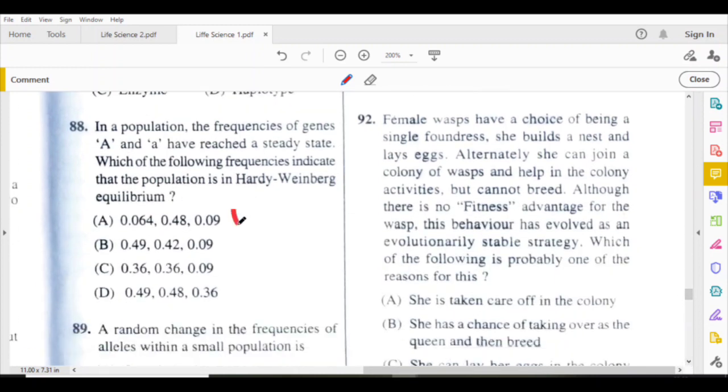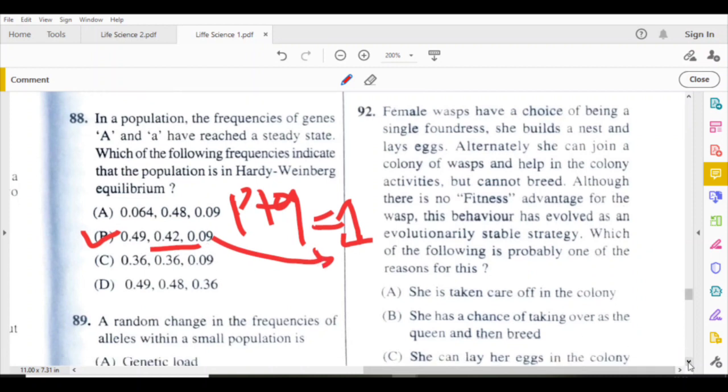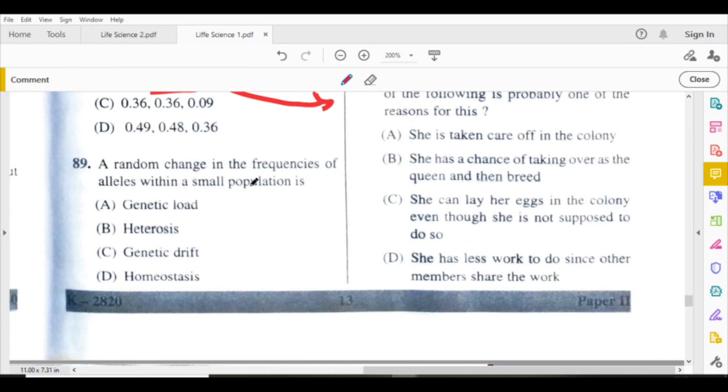This is Hardy-Weinberg equilibrium: p plus q equals to 1. Here B is the answer because if you add these three, it comes to 1. A random change in the frequencies of alleles within a small population is called genetic drift.